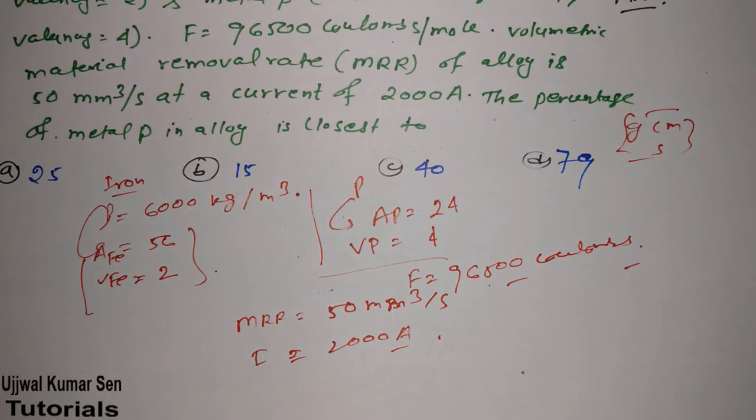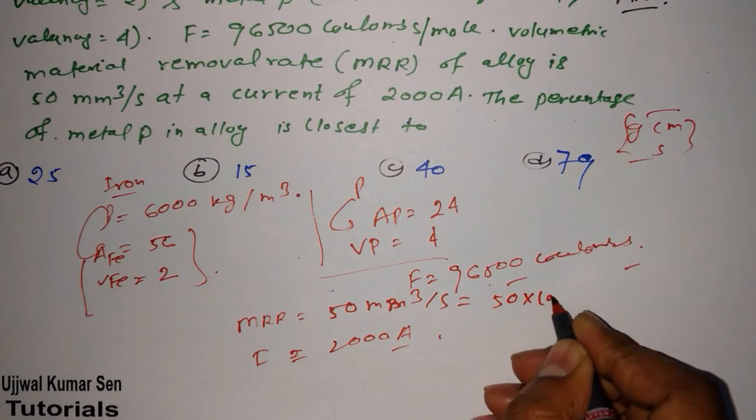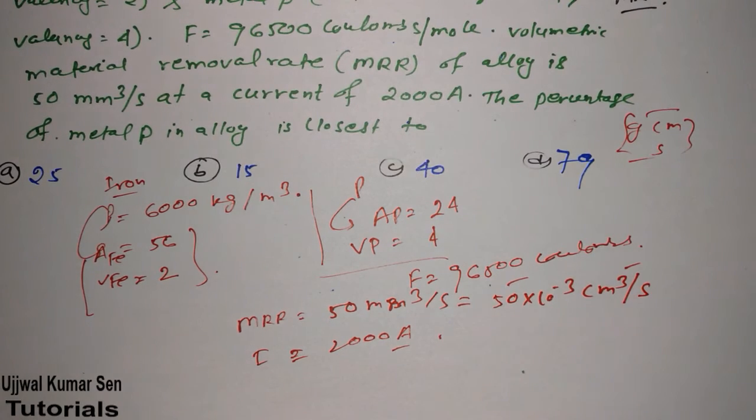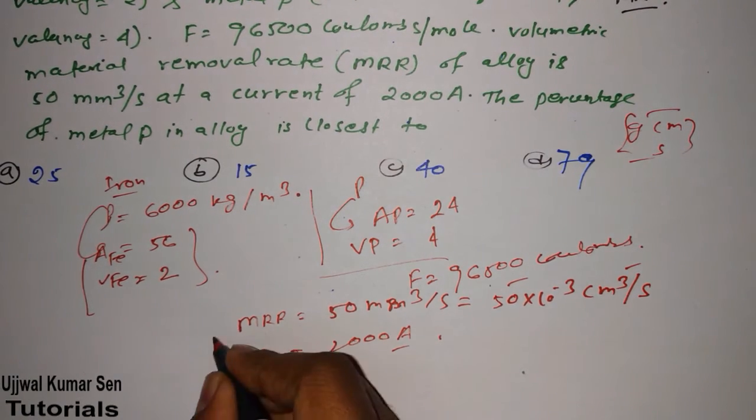First of all, we have to convert MRR is equal to 50 millimeter cube per second. If it is 50 mm cube per second, then we have to convert it into centimeter cube per second. Therefore, we have to multiply with 10 to the power minus 3, then it will become centimeter cube per second. It's done.